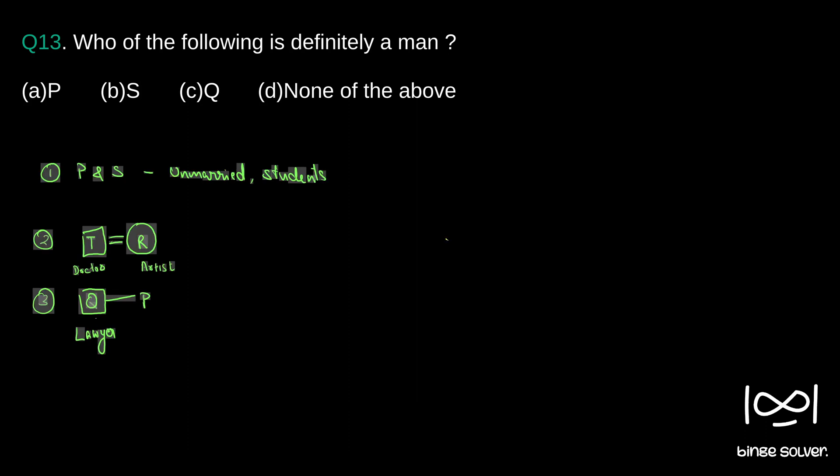Who of the following is definitely a man? As you can see, we don't know the gender of P or S — we don't have any information about their gender. But we know Q is a male person, since it is given Q is the brother of P. So the correct answer is C. Question 13 — C is the solution.